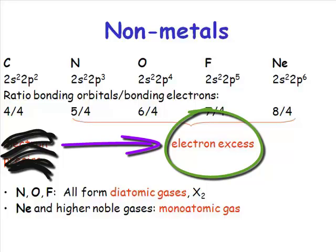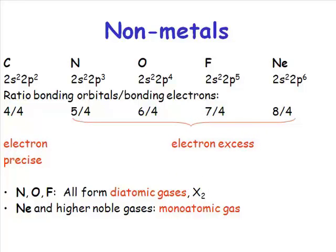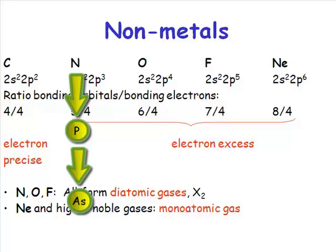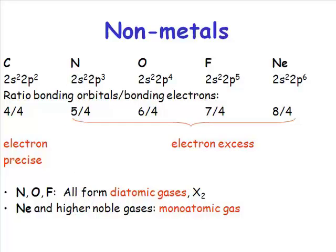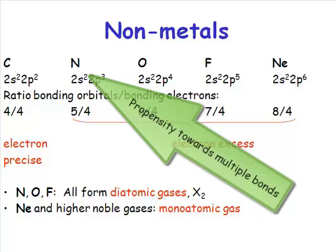If we move from nitrogen down to phosphorus and arsenic, you'll see with nitrogen, because nitrogen is small and those p-orbitals can overlap very efficiently, what we see is a propensity towards multiple bonds.